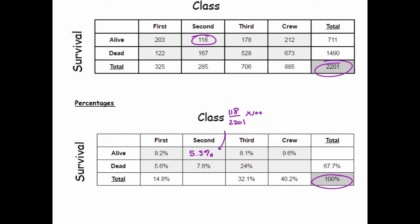Similarly, if we wanted to know the 673 people who died who were crew members, what percentage of all the passengers on the ship do they represent? We can do that by doing 673 divided by 2201 and multiply by 100, and you get about 30.6%. I did all the other calculations in a similar manner.